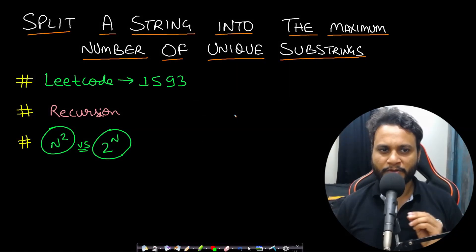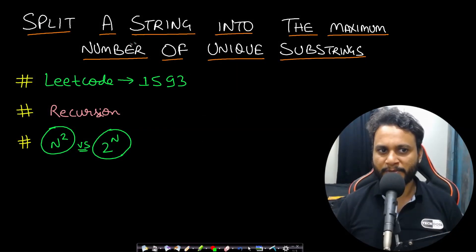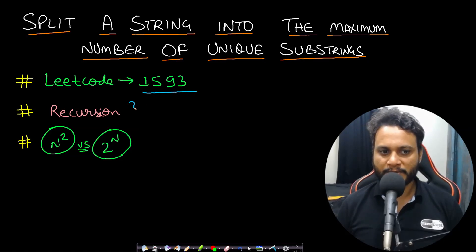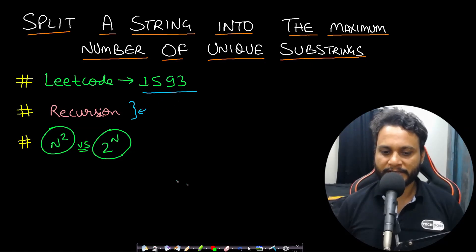Hello guys, welcome back to TakeDose. In this video we will look at 'Split a String into the Maximum Number of Unique Substrings', which is LeetCode number 1593. This is based on recursion and at the end we will be discussing the time complexity in detail.